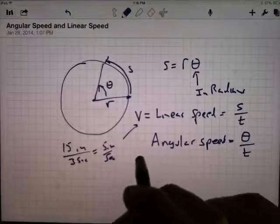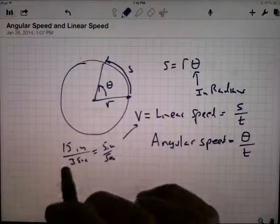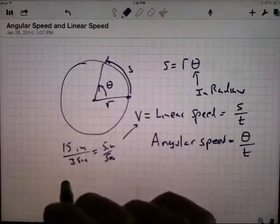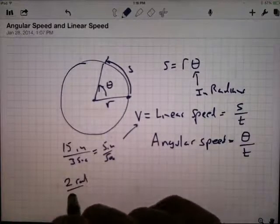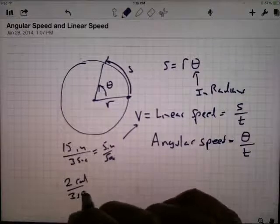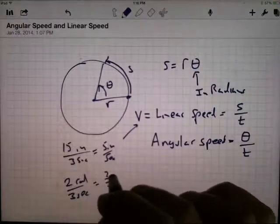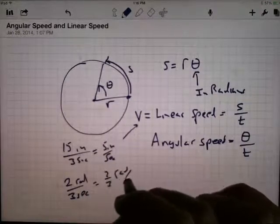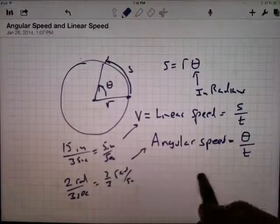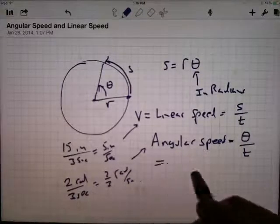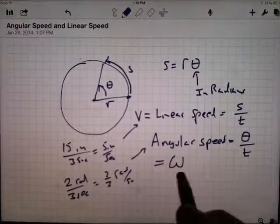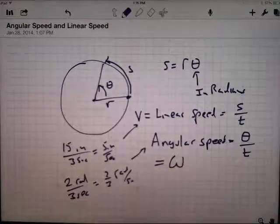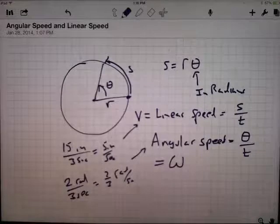On the other hand, if you do angular speed, if you said I turned through 2 radians in 3 seconds, that would be 2 thirds of a radian per second. That's an angular speed. Now, our book uses the letter, it looks like a W but it's actually a Greek letter omega. I will just probably use a W for angular speed.